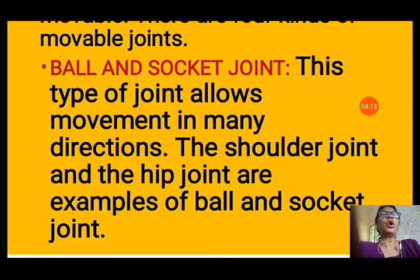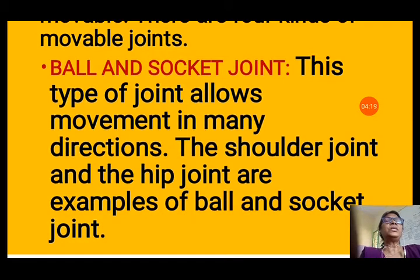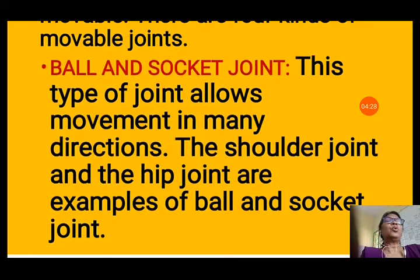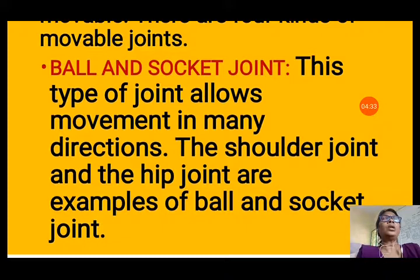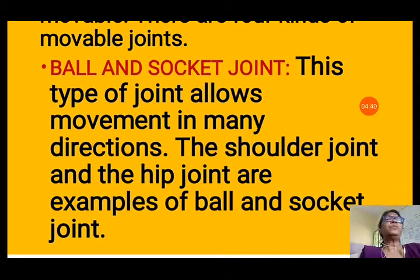First, we will discuss the ball and socket joint. This type of joint allows movement in many directions. The shoulder joint and the hip joint are examples of ball and socket joints. In this type of joint, one part of the bone is shaped like a ball and the other part is like a socket, and the ball fits inside the socket of the other bone.